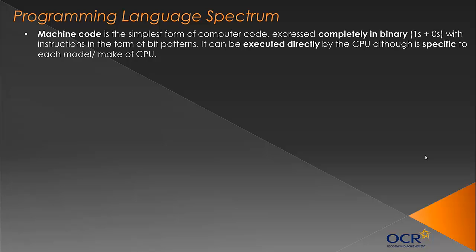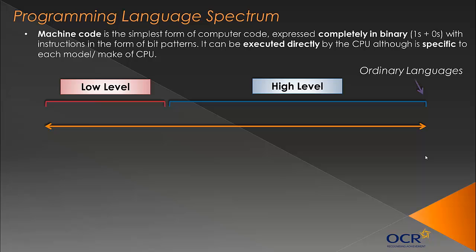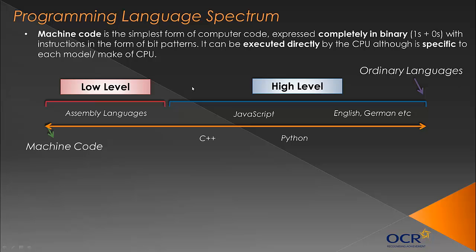So machine code is basically just a stream of binary digits and instructions in the form of bit patterns. This topic links quite nicely into another video I did about representing instructions in binary, because a lot of the stuff is directly linked. Machine code can be executed directly by the CPU — the processor.